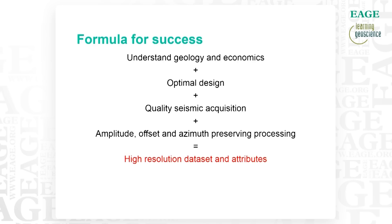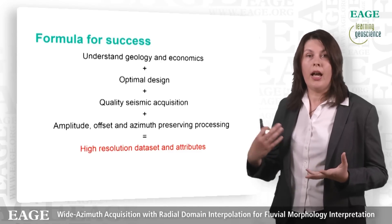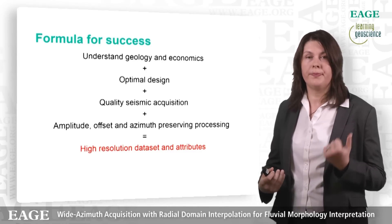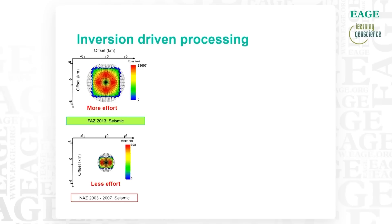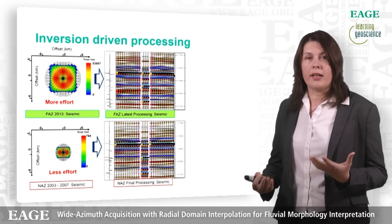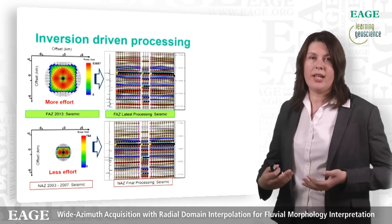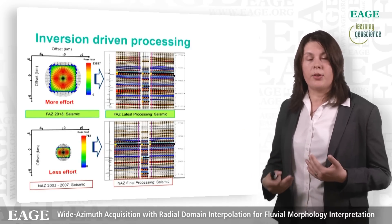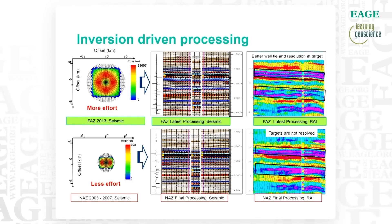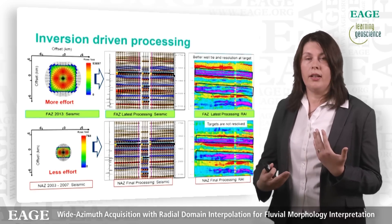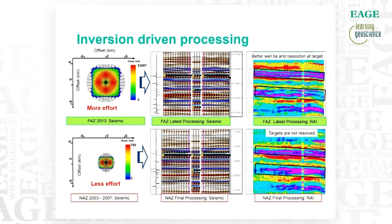What does this give us in the end? We expect a high resolution dataset suitable for specific attributes. Going back to the comparison between the narrow azimuth legacy seismic and the new full azimuth data: the seismic looks comparable at first, but looking at the details, the well tie is much better and the overall amplitude balance is better in the new full azimuth processing. The most striking difference is when you start extracting seismic attributes: when you invert the data into relative acoustic impedance, the resolution is significantly improved and the well tie is much better with the new full azimuth seismic acquisition and processing.